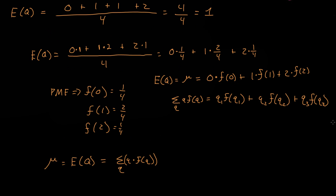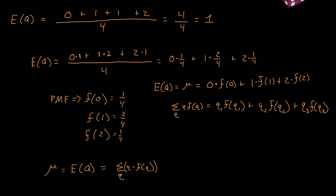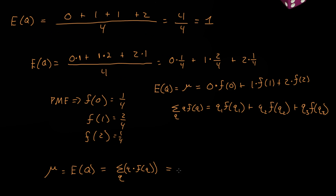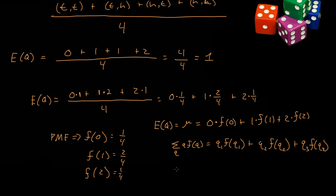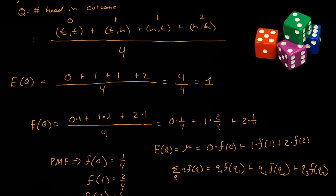This is the same thing as 0 plus 1 plus 1 plus 2 all over 4 for our system up here. So technically the expected value is equal to the summation of q times f(q) over all the different values of q.